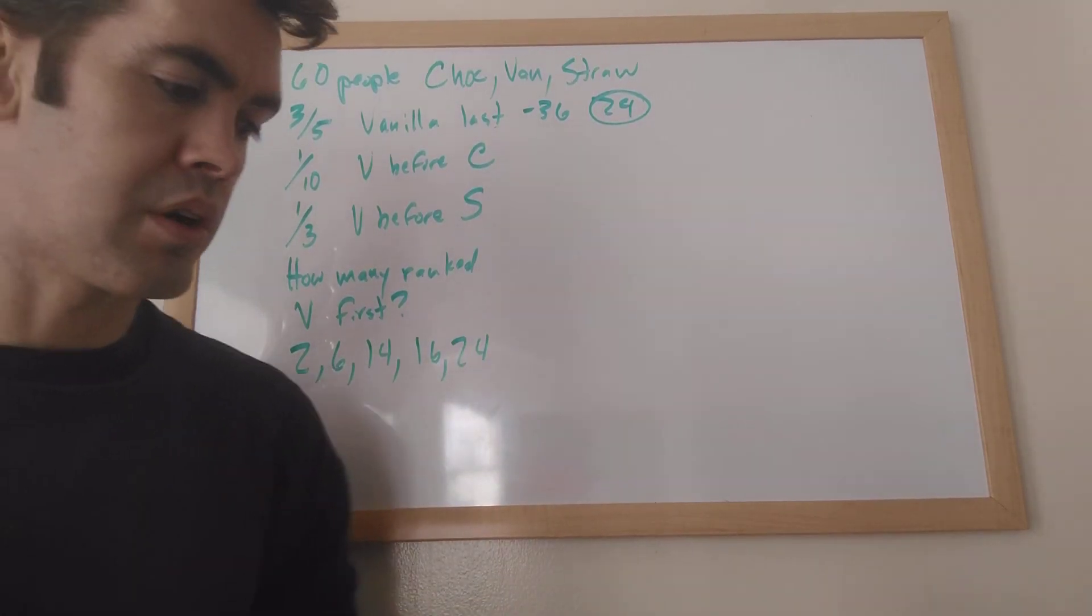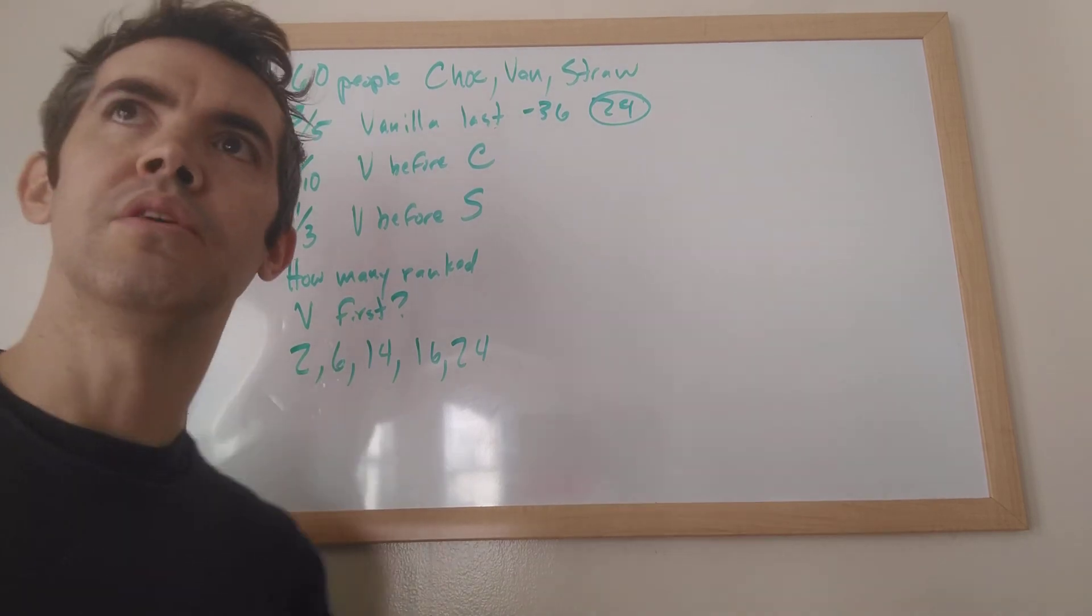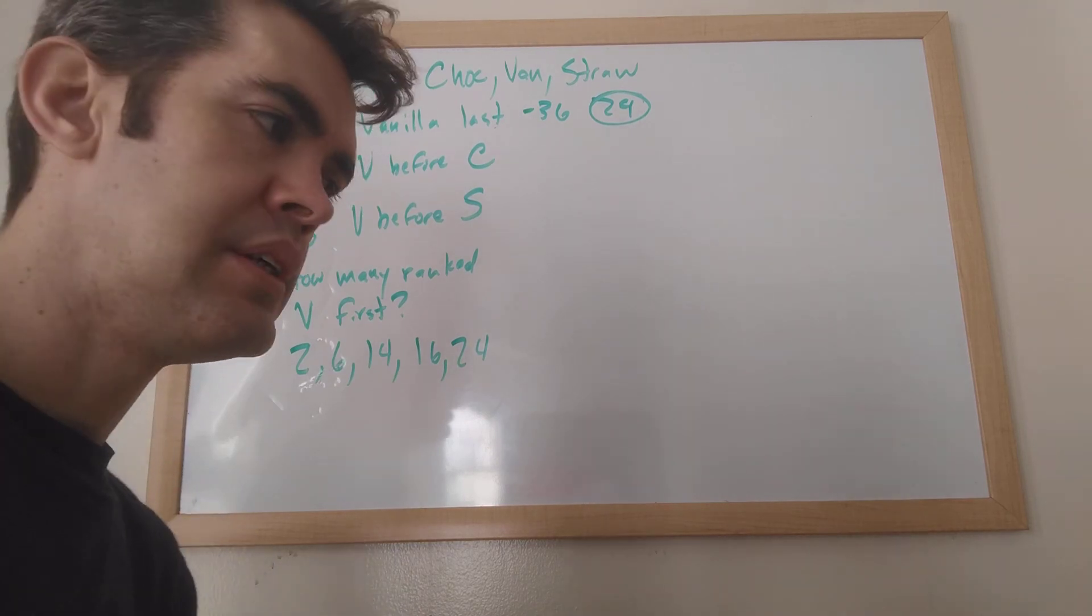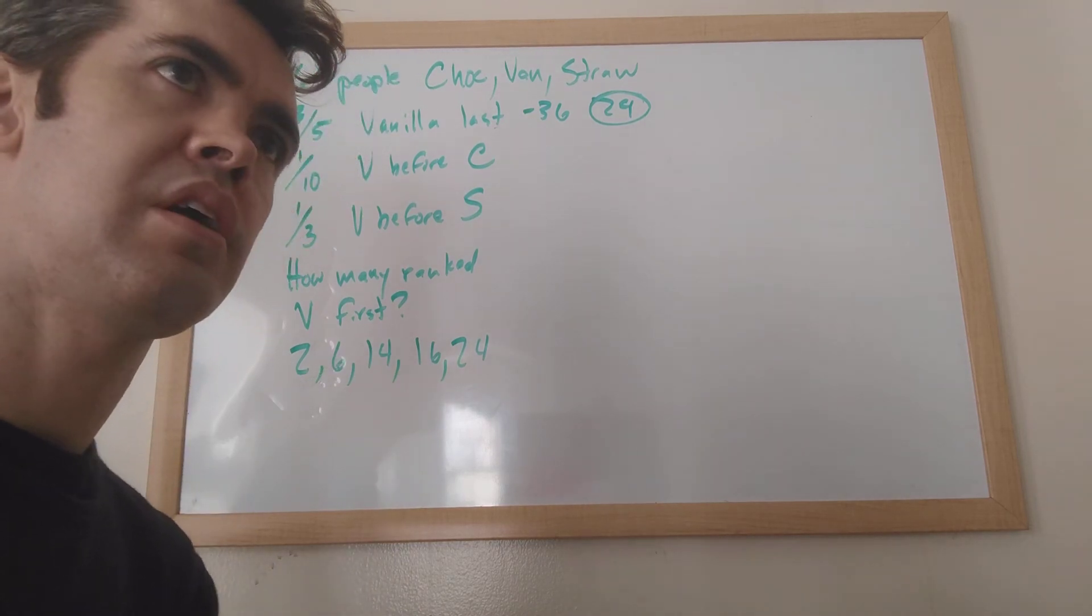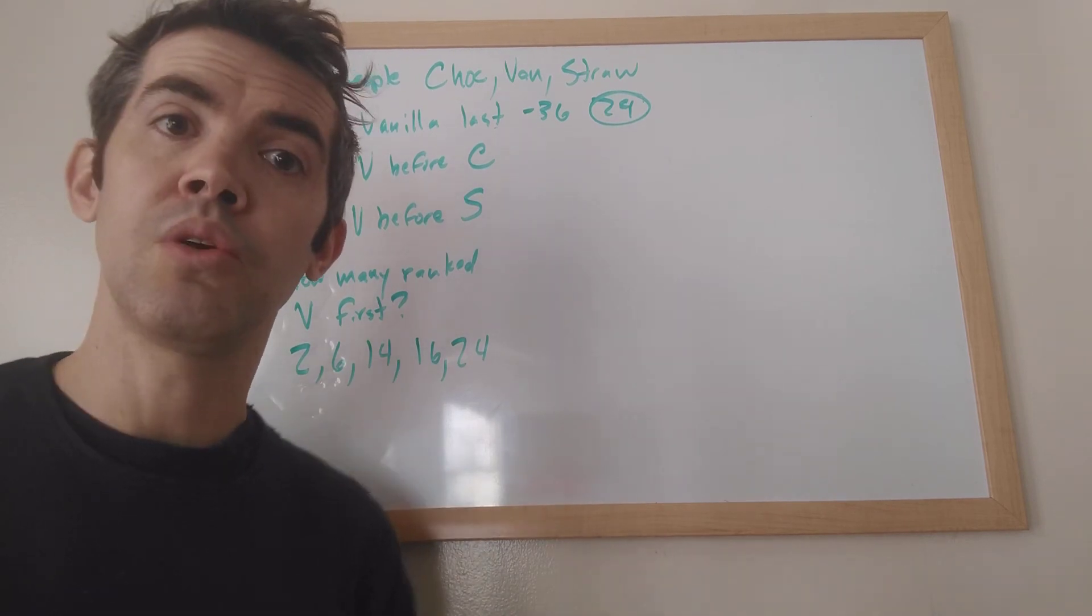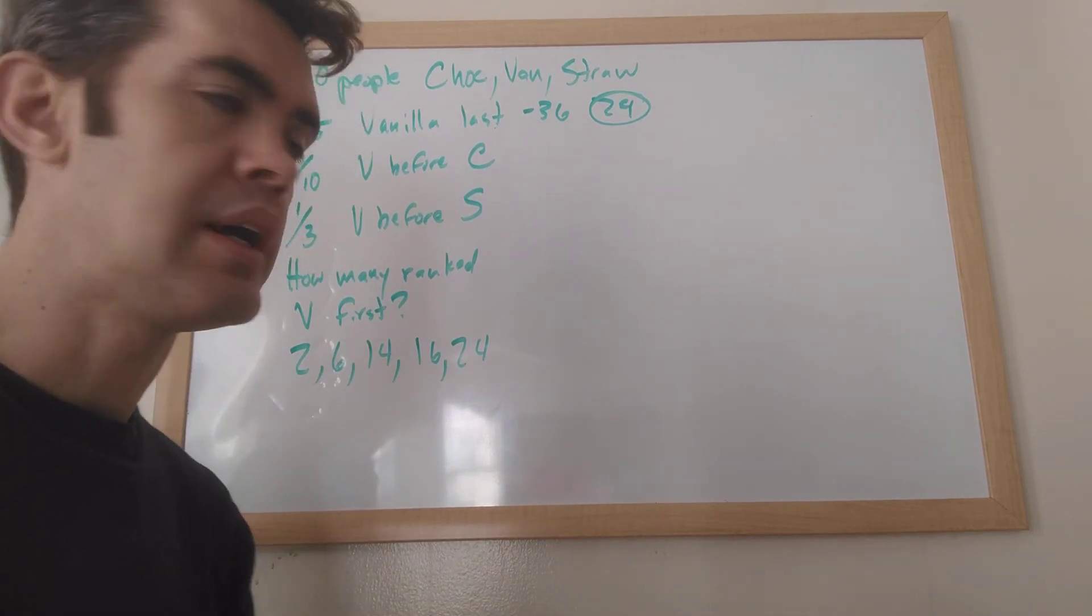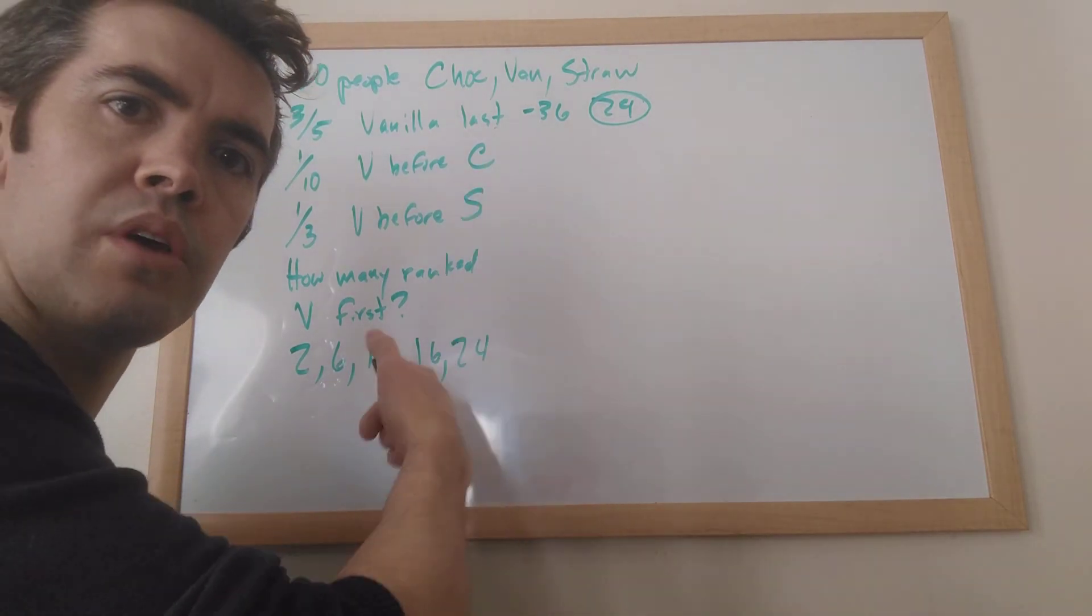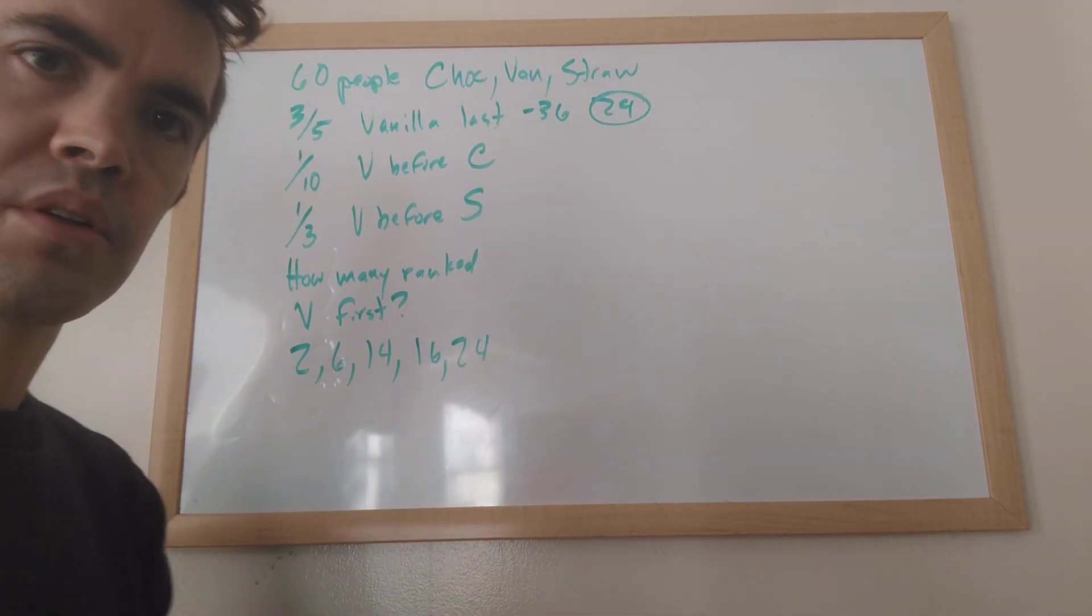Now, most of the time, a double overlapping set problem looks like this. You know, you got a bunch of kids and they're like taking Taekwondo or they're not taking Taekwondo. You got a bunch of other kids and they're taking Brazilian Jiu Jitsu or they're not taking Brazilian Jiu Jitsu. And you can take both if you want, right? Or neither. So it's usually, you know, Jiu Jitsu, not Jiu Jitsu, Taekwondo, not Taekwondo. This doesn't look like that.